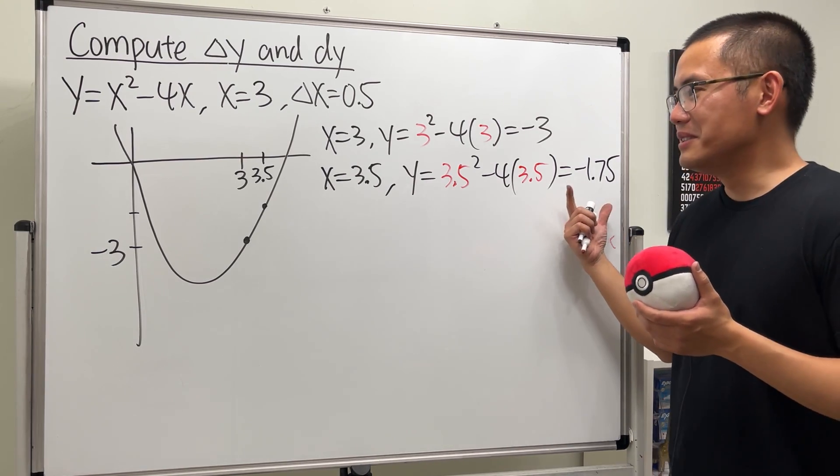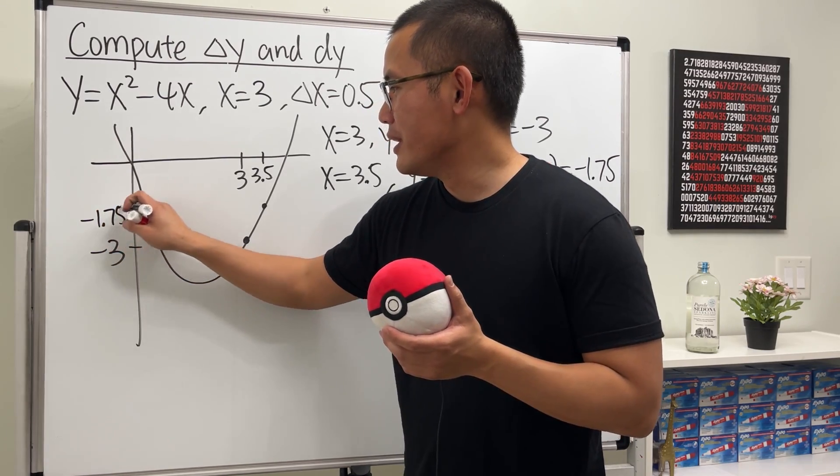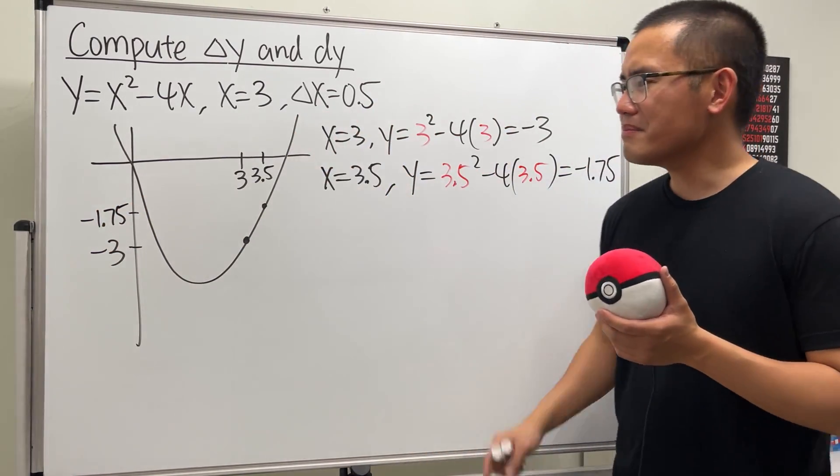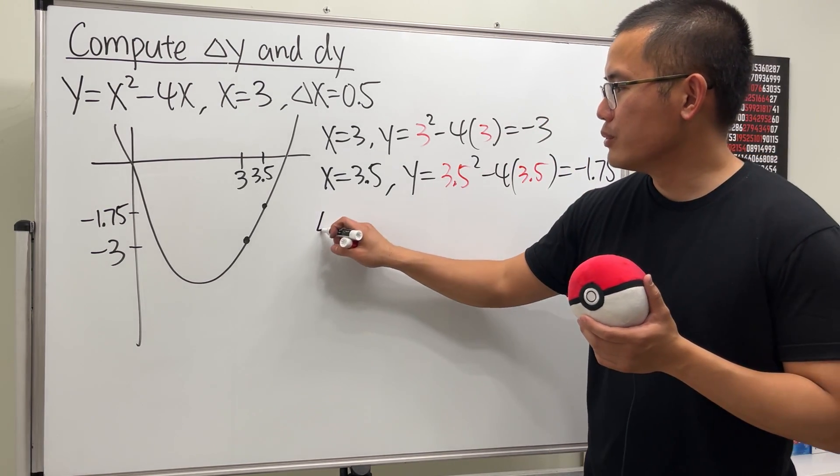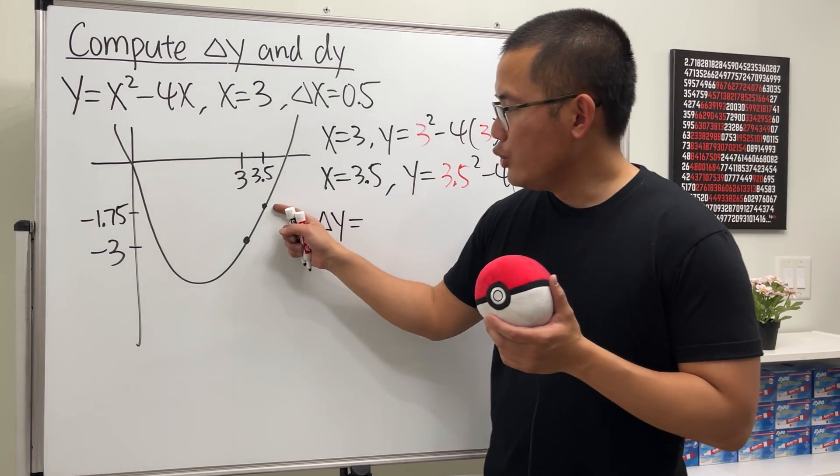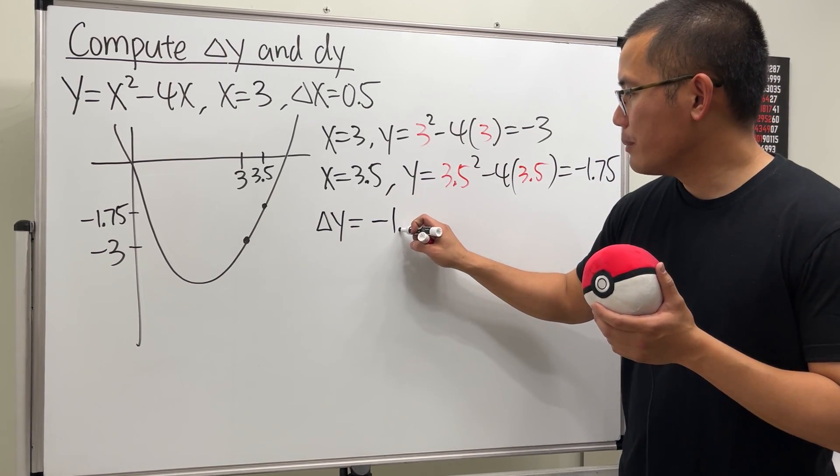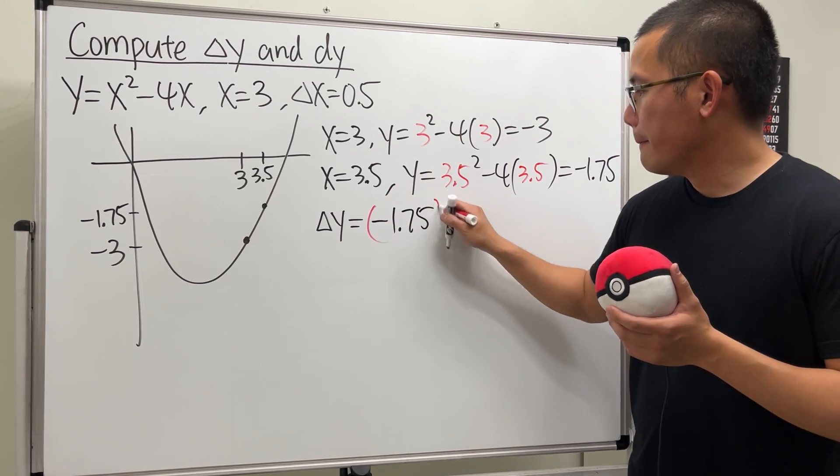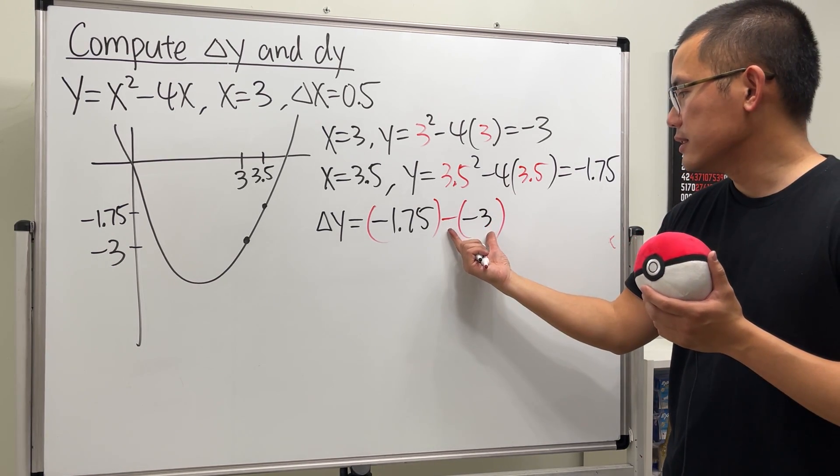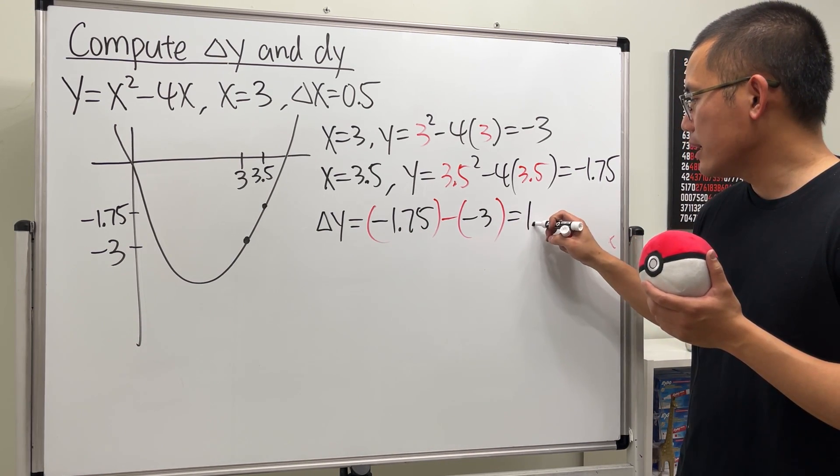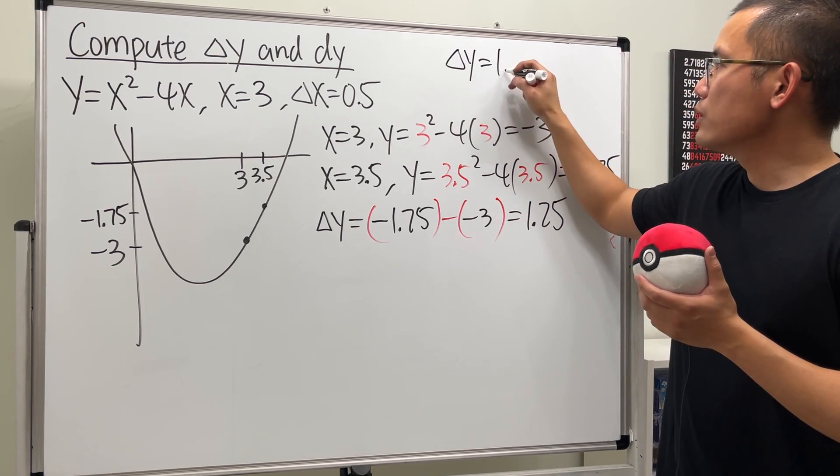You see, this right here is much harder to do compared to that, and I did it for you guys. So all together we will end up with negative 1.75. Still pretty good because this is still an exact answer. Now with this and that we can compute delta y, and this is just going to be the new y value minus the original y value. So that will be negative 1.75 minus the original, which is negative 3.